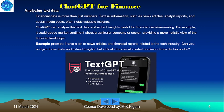Analyzing text data: financial data is more than just numbers. Textual information such as news articles, analyst reports, and social media posts often holds valuable insights. ChatGPT can analyze this text data and extract insights useful for financial decision-making — for example, gauging market sentiment about a particular company or sector to provide a more holistic view of the financial landscape. Example prompt: given a set of news articles and financial reports related to the tech industry, analyze the text and extract insights indicating the overall market sentiment towards the sector.